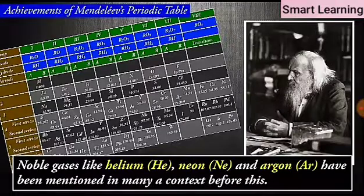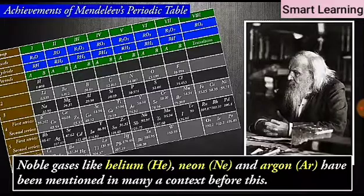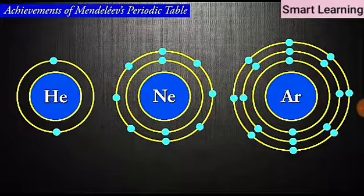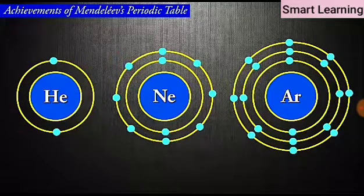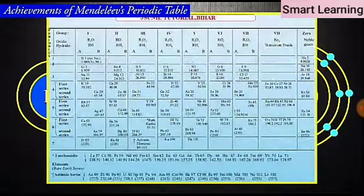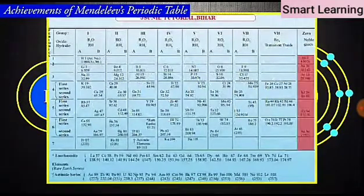Noble gases like helium, neon and argon have been mentioned in many contexts before this. These gases were discovered very late because they are very inert and present in extremely low concentrations in our atmosphere. One of the strengths of Mendeleev's periodic table was that when these gases were discovered, they could be placed in a new group without disturbing the existing order.